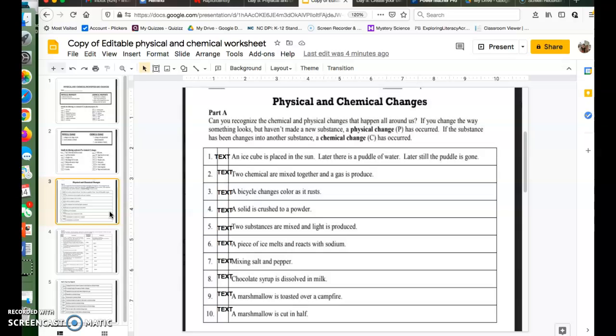When I take two chemicals and I mix them together and a gas is produced, this is an example of a chemical change because we're changing the way something is chemically, we're changing the composition or what it's made up of. So that's an example of a chemical change.